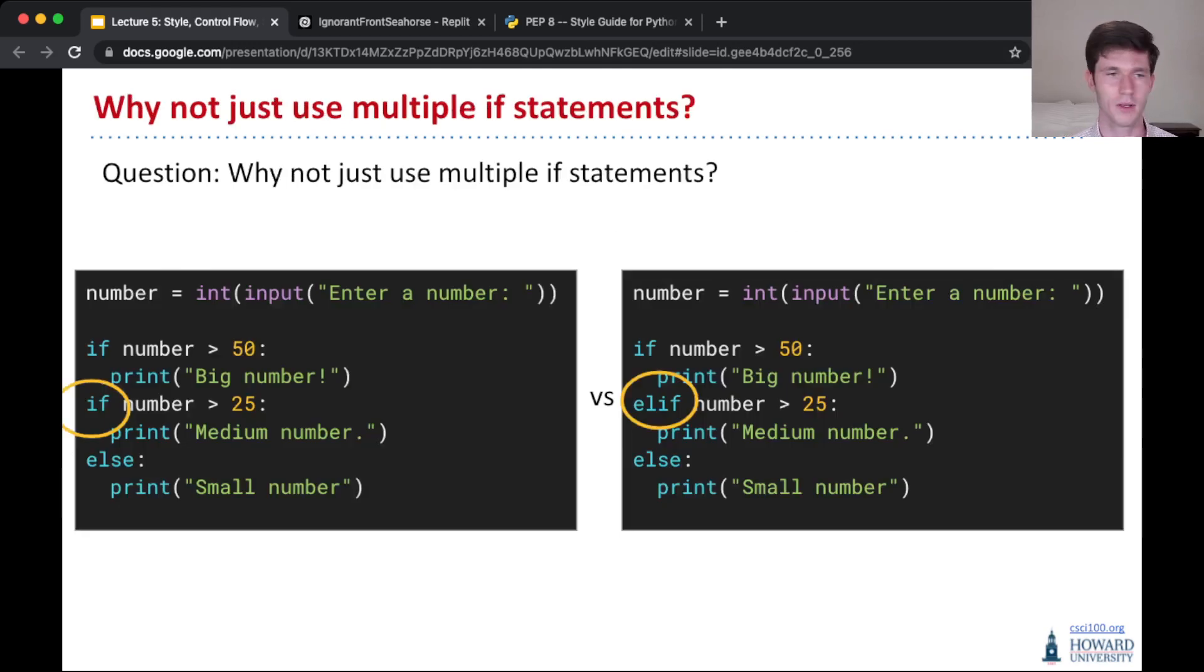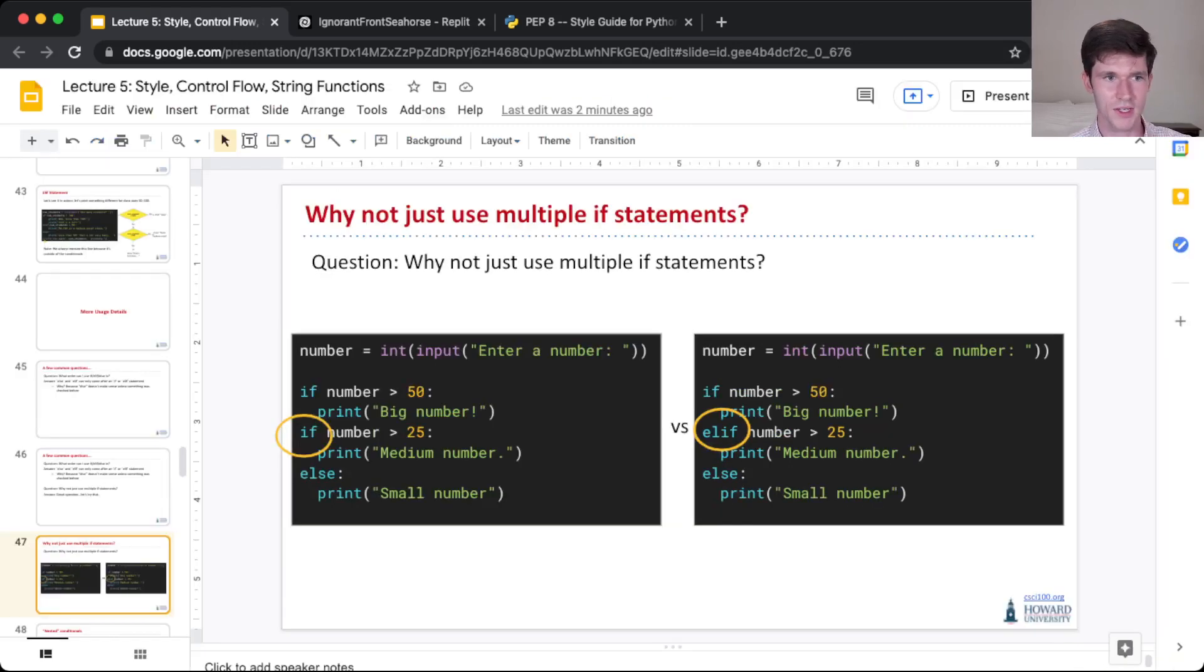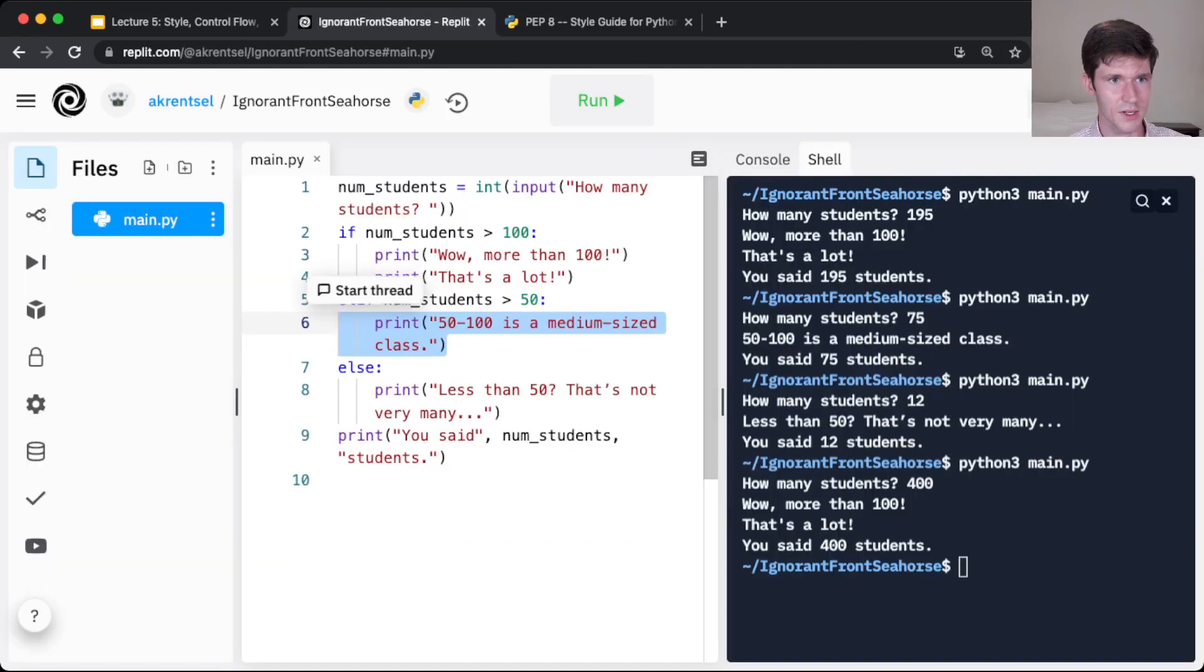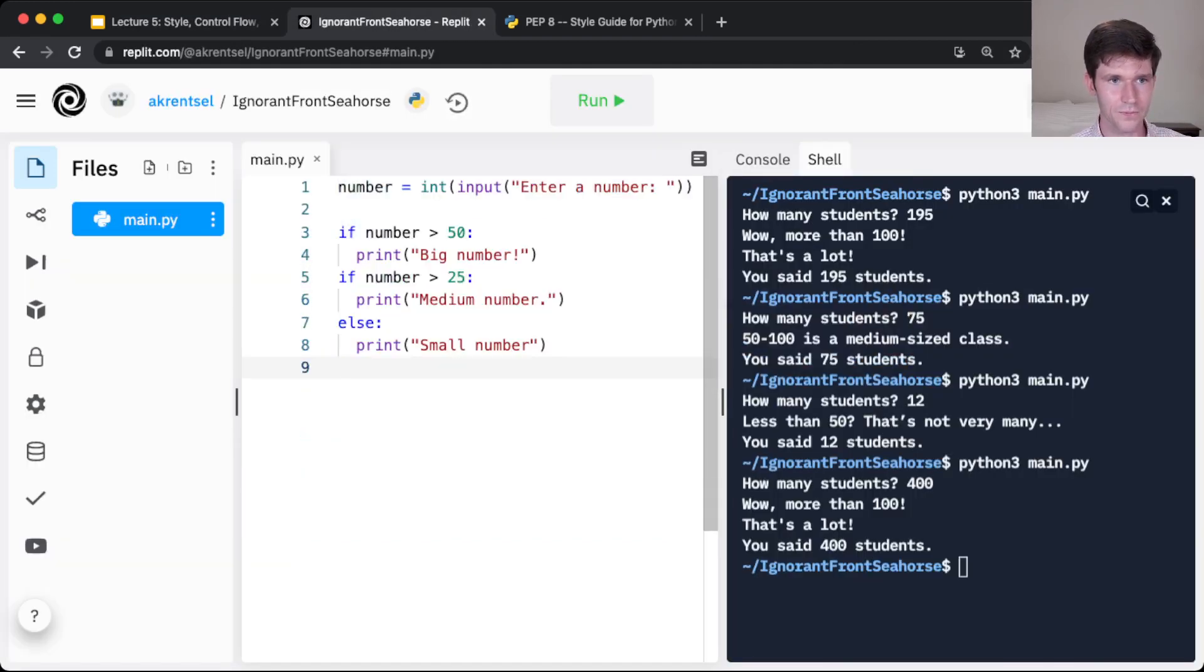So here's a comparison. I have some number here, very similar to our class size example. So if I take this and say I run it, this is just using two ifs.